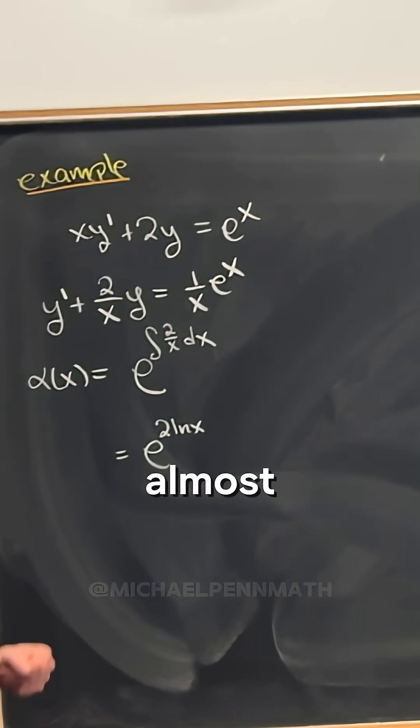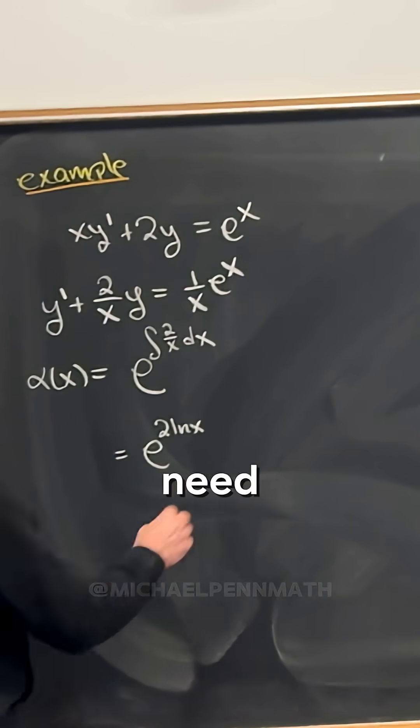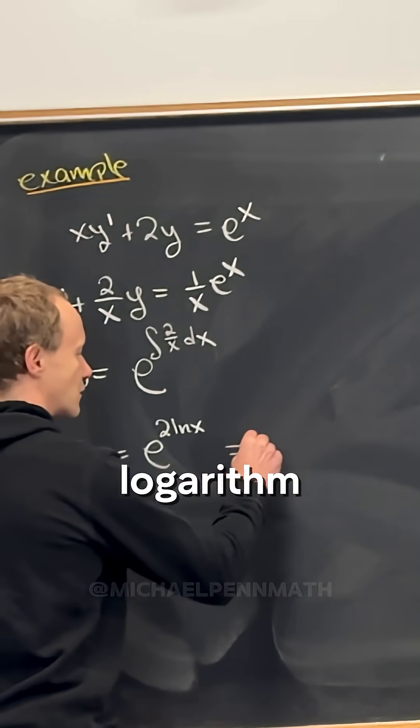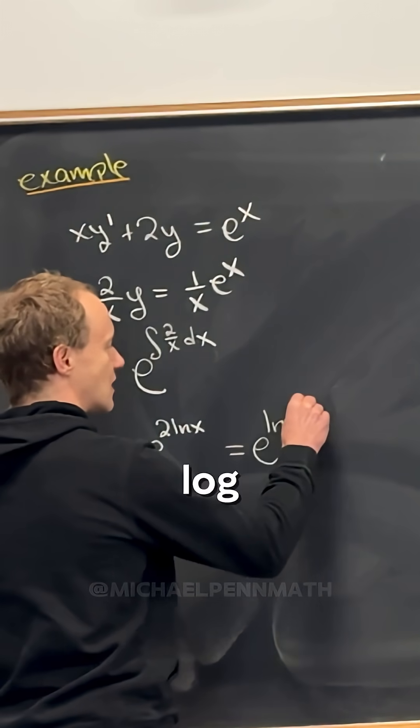And then, well, this is almost set to the point where you can cancel the e and the natural log. But what we need to do is use a logarithm rule to write this as e to the natural log of x squared.